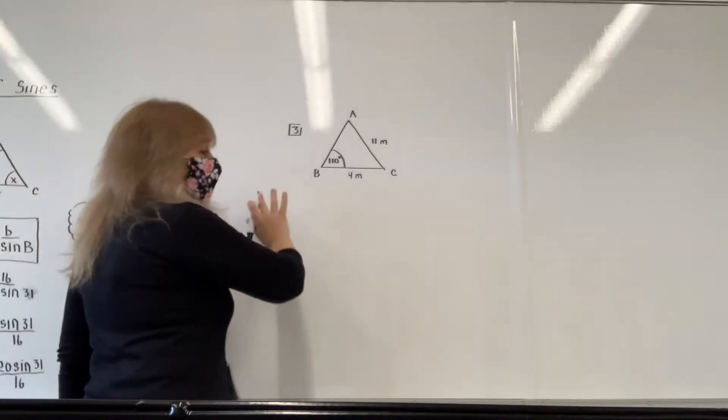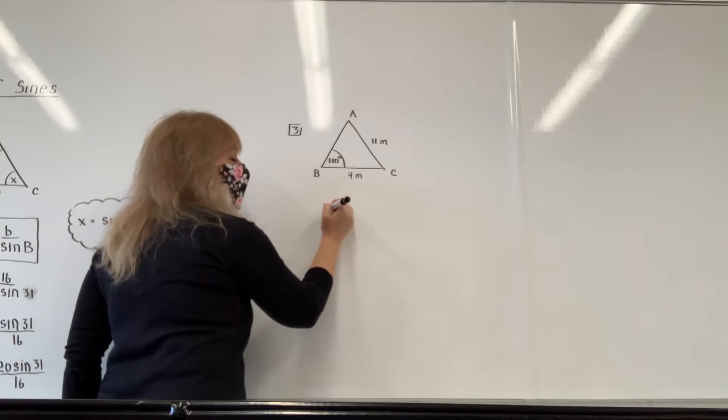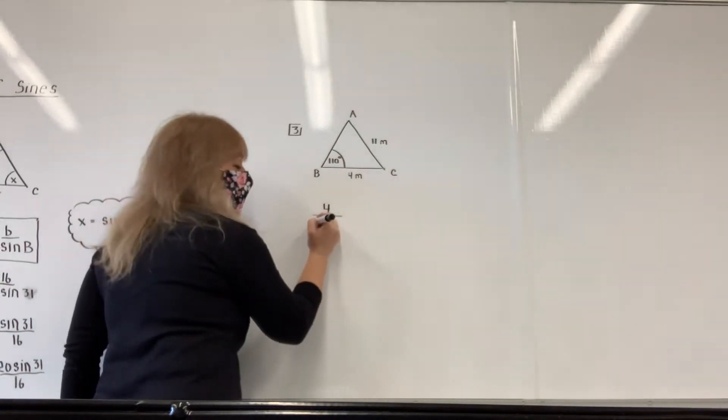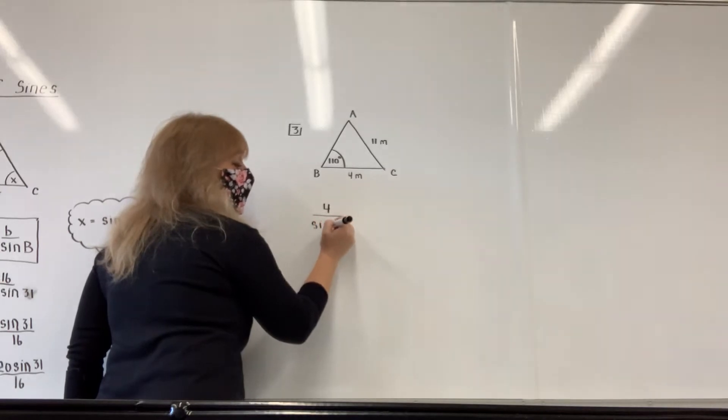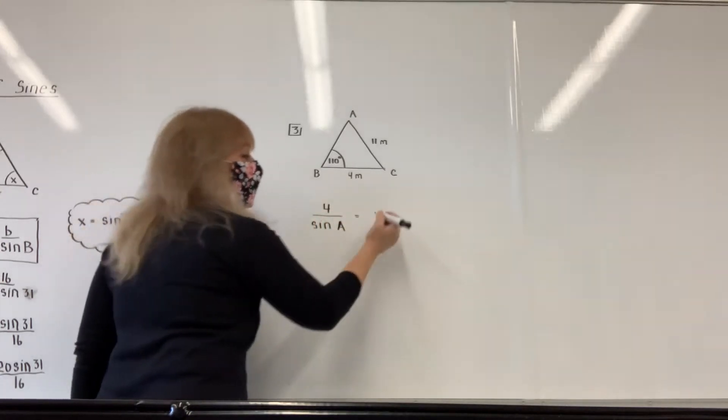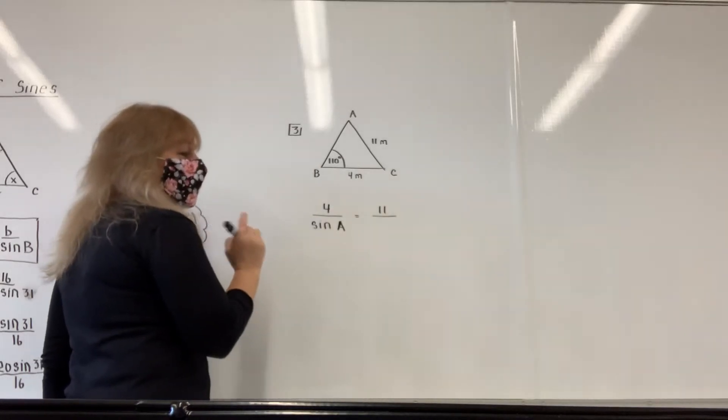So the rule is, and I'm not even going to write down the formula, pick a side, divide by the sine of the opposite angle. So I'm going to write down sine of A because that's the opposite angle. And then pick another side, and then I'm going to divide by the sine of the opposite angle.